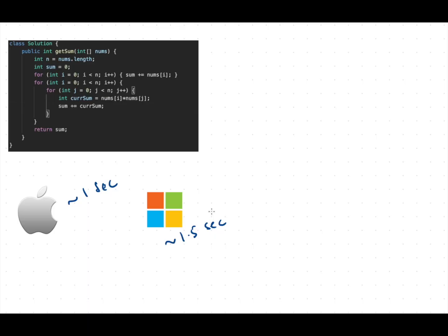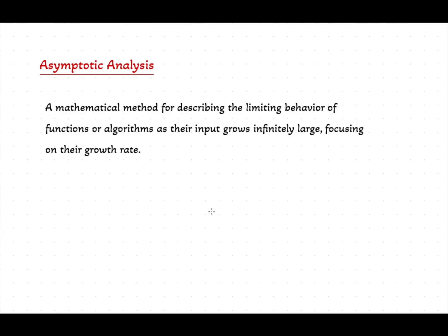That's why we use something called asymptotic analysis. Asymptotic analysis measures an algorithm based on how input grows and it focuses on growth rate not in seconds or milliseconds but in terms of how many operations it performs as n increases. We analyze the algorithm independently as if everything else stays the same and we focus on only one thing, input.